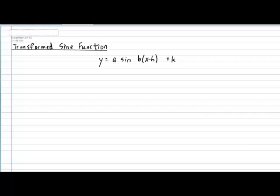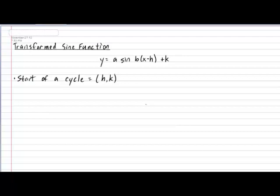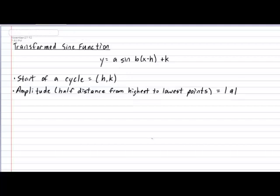The transformed sine function has a lot of elements packed into it, so let's go over each element slowly. Let's begin with the easiest element to identify, which is where the cycle starts. The start point of the cycle is revealed by h and k together. The next easiest element is the amplitude — defined as the half distance from the highest to the lowest points on the graph — and it can be calculated by taking the absolute value of the variable a.